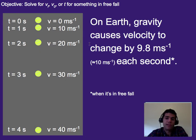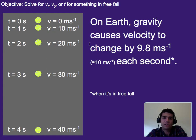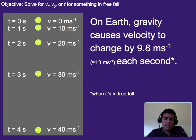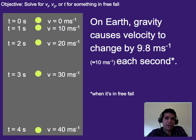On Earth, gravity causes everything to change its velocity by 9.8 meters per second each second — this is when it's in freefall. So if something starts with a speed of 0, it's going to gain about 10 meters per second in speed each second. After 1 second it'd be going 10, 2 seconds 20, 3 seconds 30, 4 seconds about 40. In this class it's OK to use 10 since it's a round number and makes things easier, but 9.8 is the slightly more accurate version, and there's an even more accurate version we'll talk about in a second.